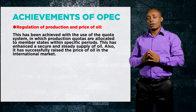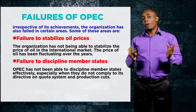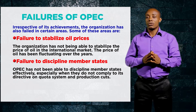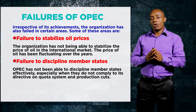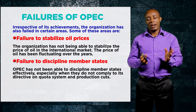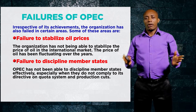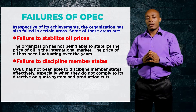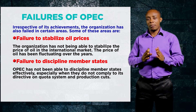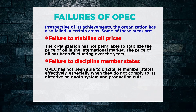Despite these achievements, OPEC still has some failures. One failure is the inability to stabilize oil prices, as prices on the international market have continued to fluctuate over the years. Another failure is the inability to discipline member states. OPEC gives directives on the quantity of oil to be produced through the quota system, but member states sometimes produce more than their allocated quota to make more gains, and OPEC has not been able to punish these defaulting states.